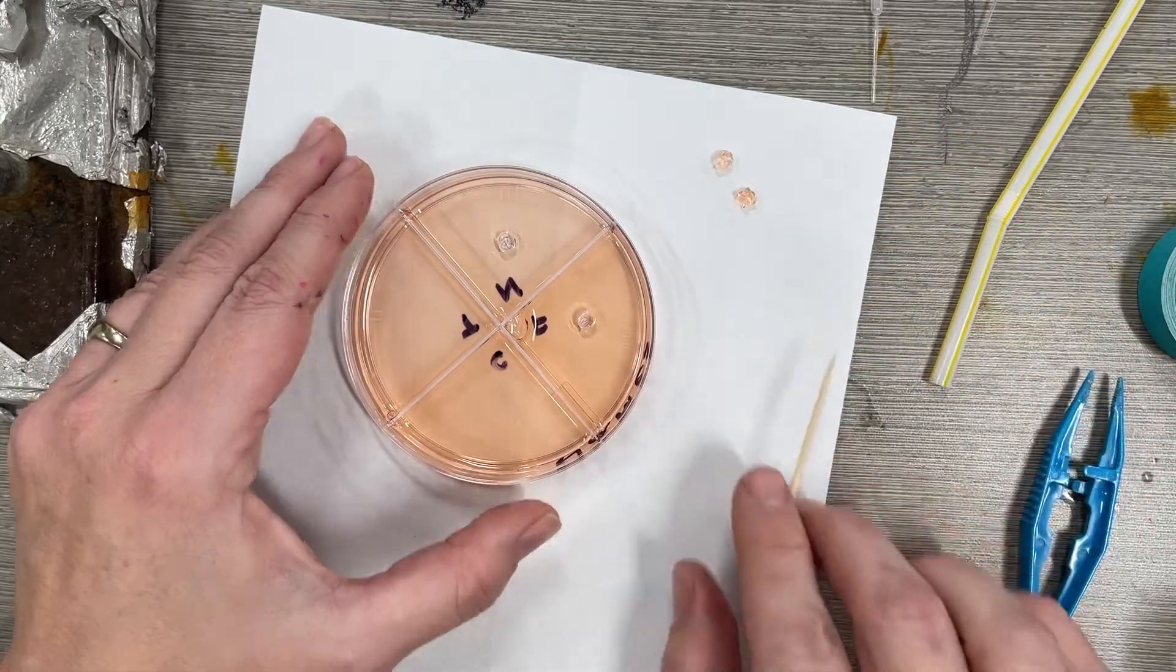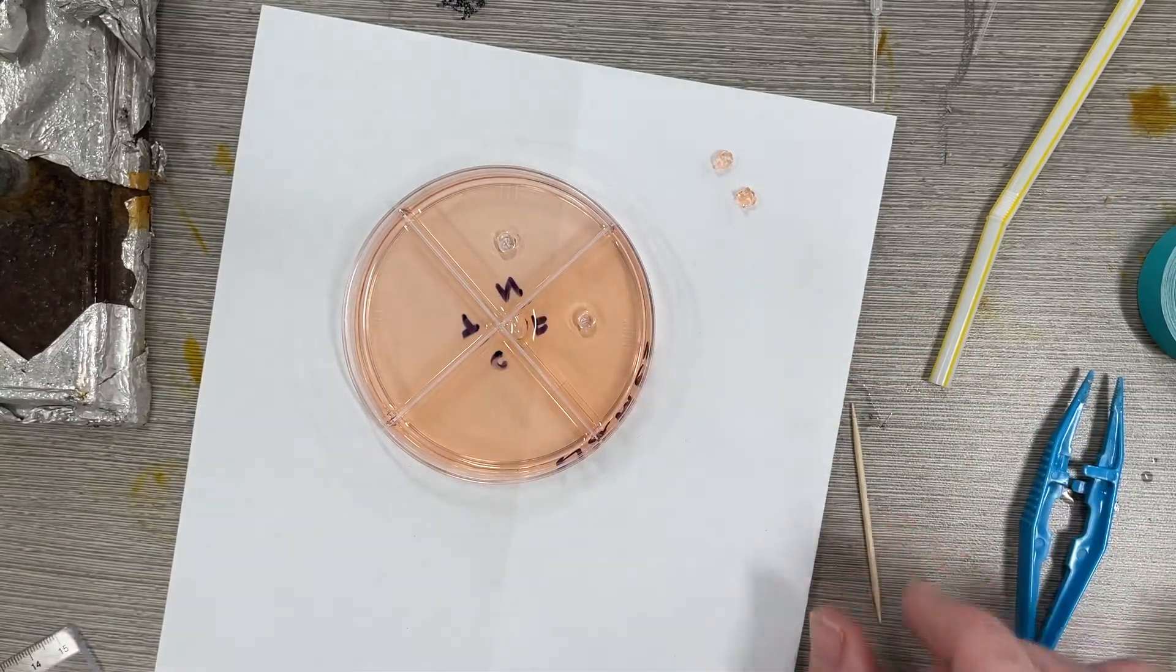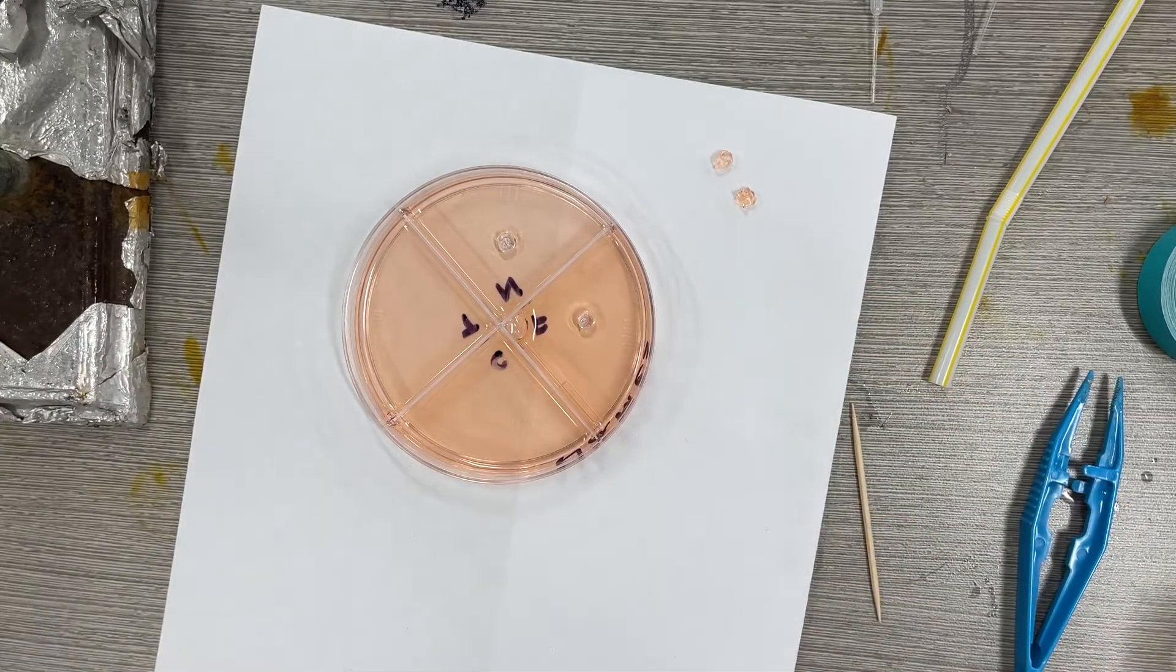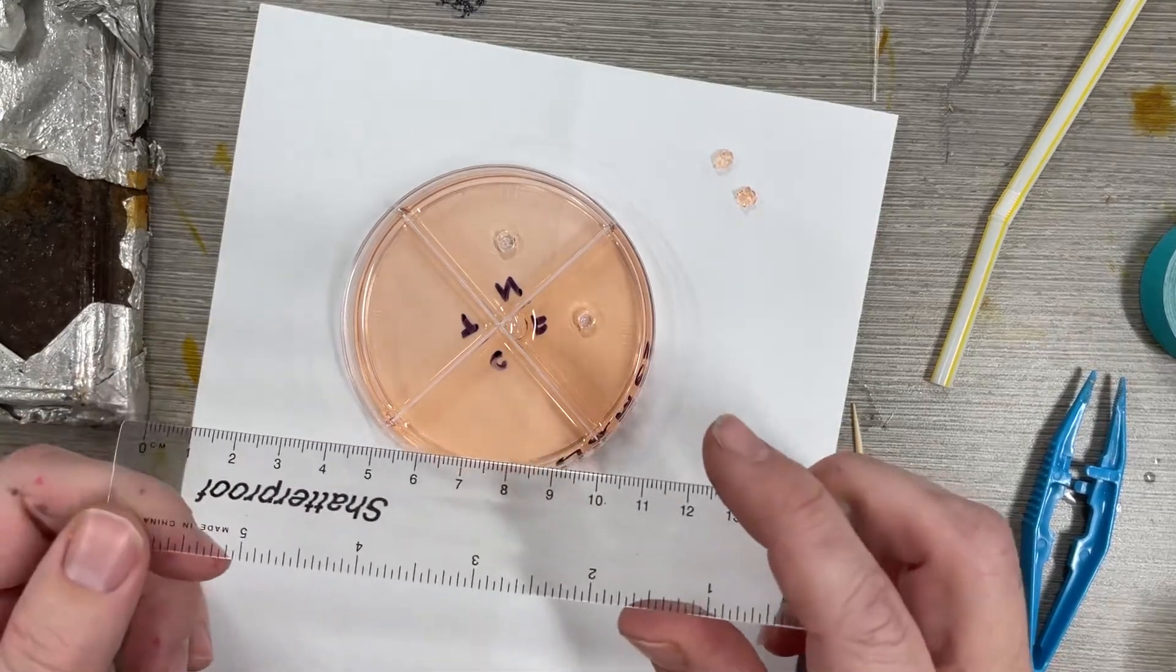I'll do that for the remaining wells so I have four holes on here. Before I put my solutions in, I want to make sure I take the measurement for the diameter of the largest part of my core sample.